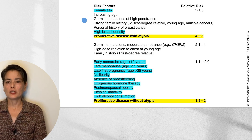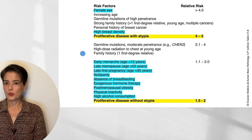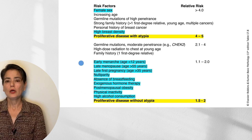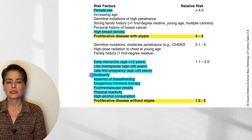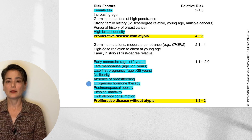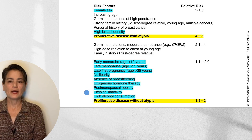In addition to germline mutations of high penetrance such as BRCA1 and 2, we have some with moderate penetrance such as CHEK2. High-dose radiation to the chest at a young age or one first-degree relative with breast cancer does increase relative risk. All of the slight-increase risk factors are associated with increased exposure to estrogen: early menarche and late menopause, nulliparity, exogenous hormone therapy, obesity — since peripheral conversion of testosterone to estrogen occurs in fat tissue — and high alcohol consumption as well as physical inactivity.